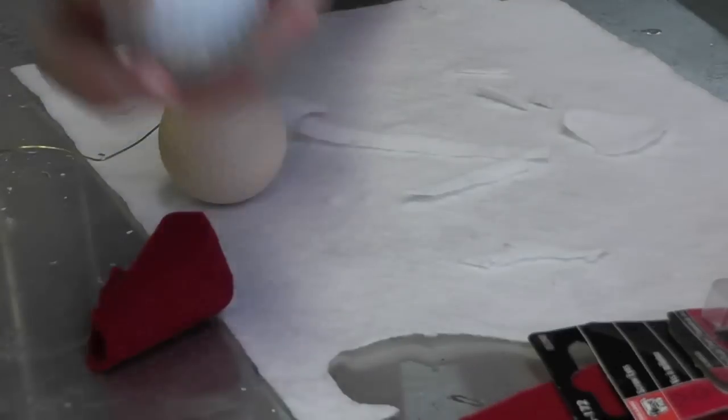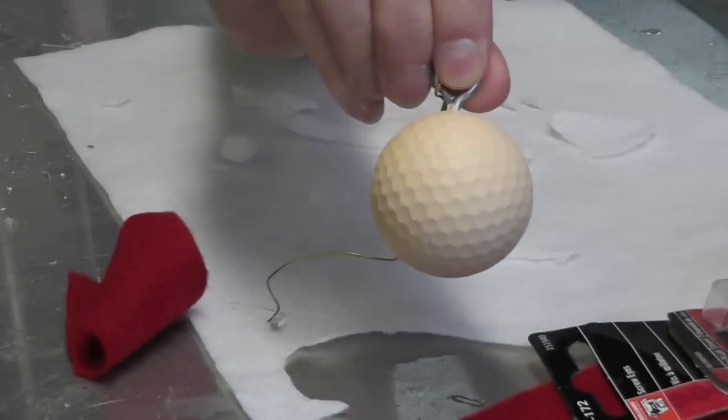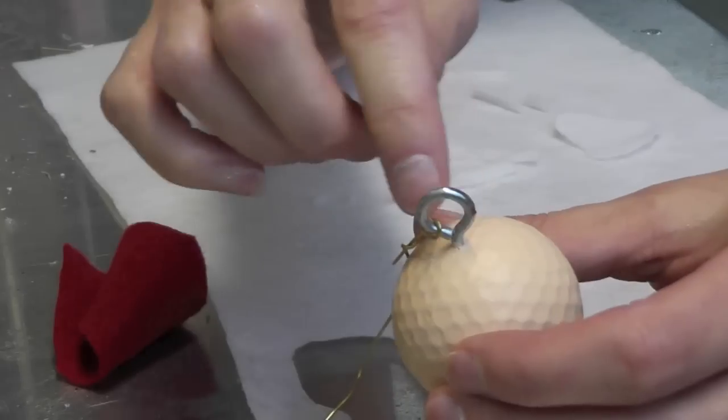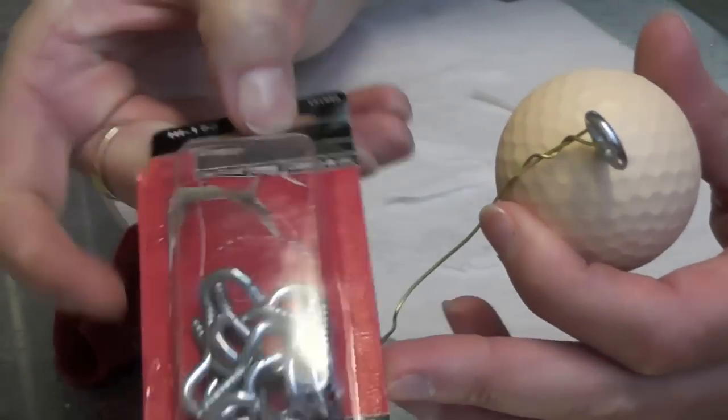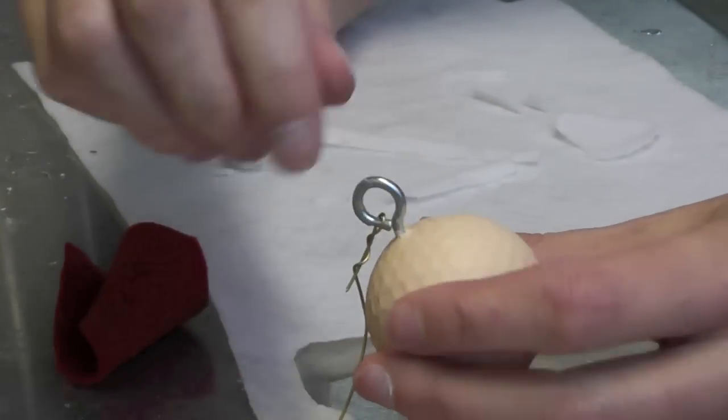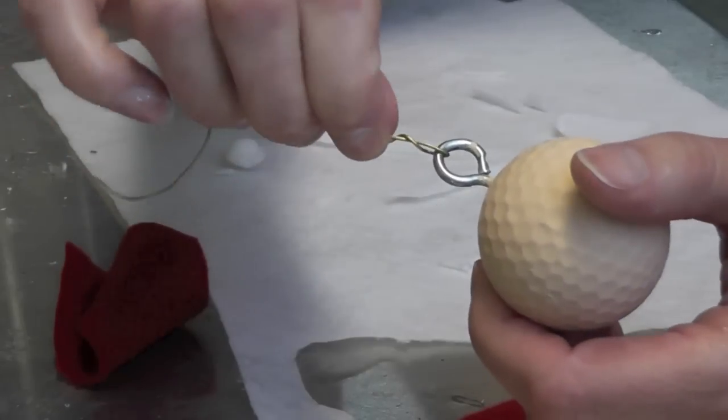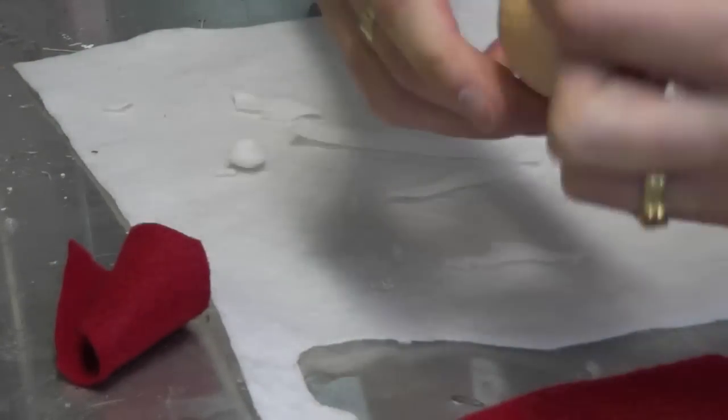I just took a regular golf ball and I painted it with a flesh tone acrylic paint. I had drilled a hole in it even before I painted it and I took a package of these screw eyes, and if you just get it started it twists in really easily. Then I just put a piece of wire on there, painted it, hung it up to dry, and now we're going to move on to the next part.